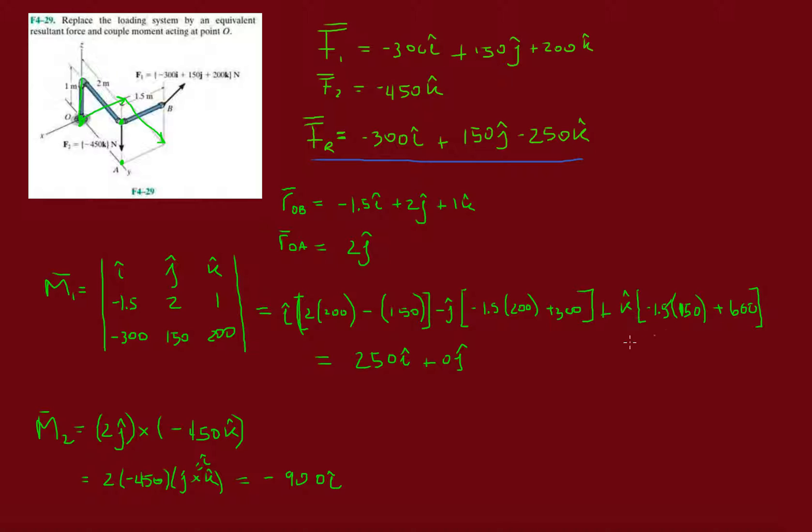Then minus 1.5 times 200 plus 300, we got 0. Let's say plus 0j. And last but not least, the k, let's do minus 1.5 times 150 plus 600, so plus 375.